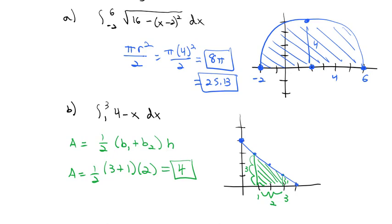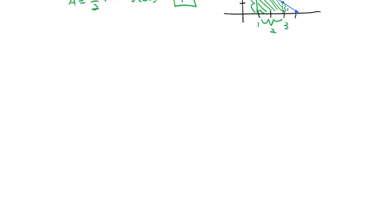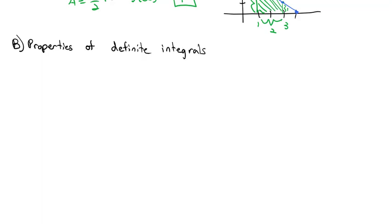Geometry makes finding some areas a lot easier. Another tool we can use is the properties of definite integrals — these come directly from the summation formula definition, similar to the sigma properties we saw in the previous lesson.